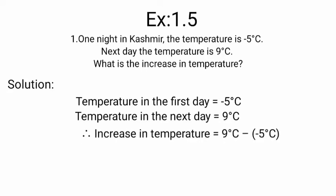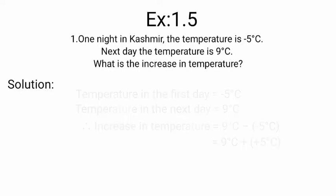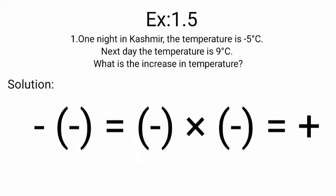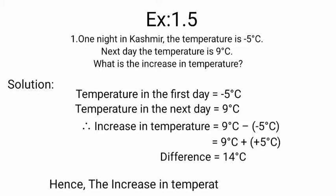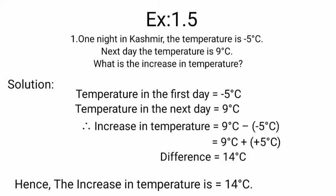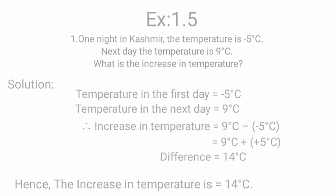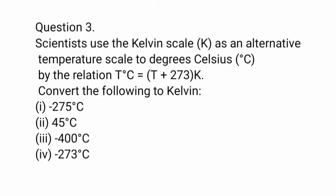Therefore, the increase in temperature is equal to 9 degrees Celsius minus of minus 5 degrees Celsius. Minus of minus means minus into minus, which is equal to plus. So we need to add 9 degrees Celsius with 5 degrees Celsius. When we add 9 with 5 we get 14 degrees Celsius. Hence the difference in temperature is equal to 14 degrees Celsius, which is the required answer.